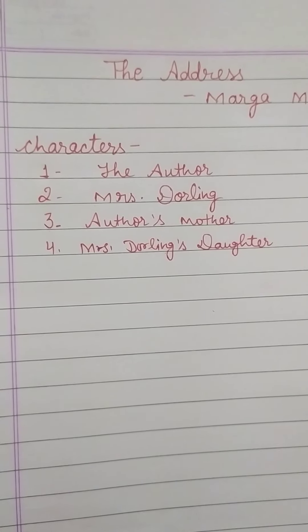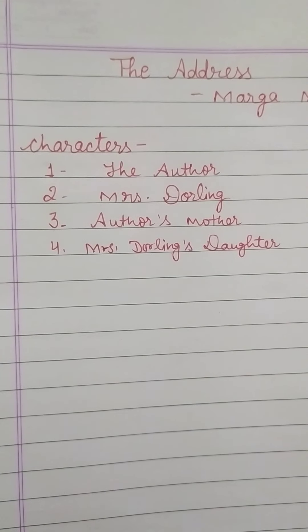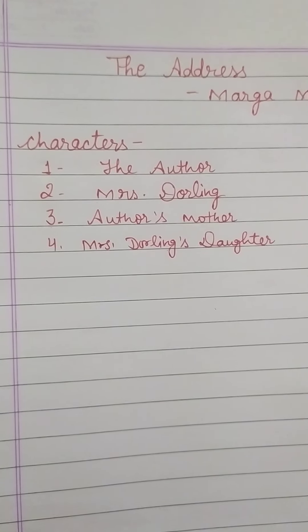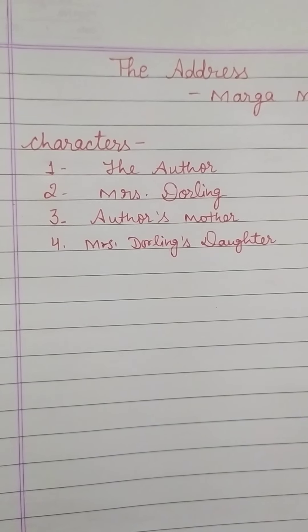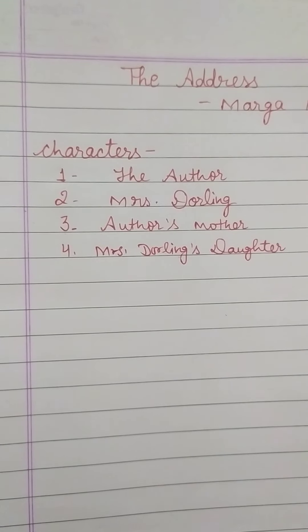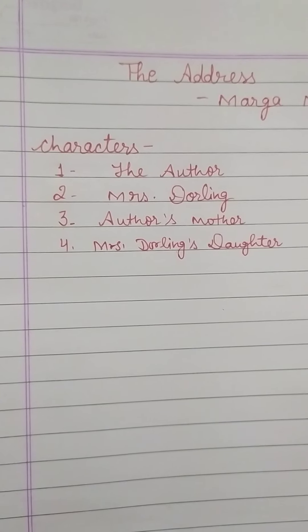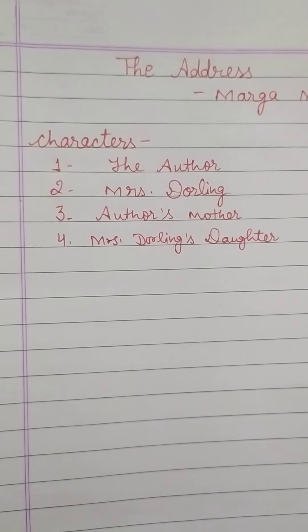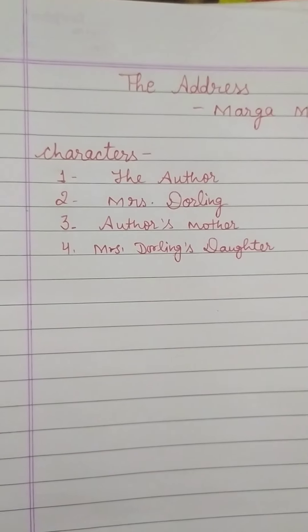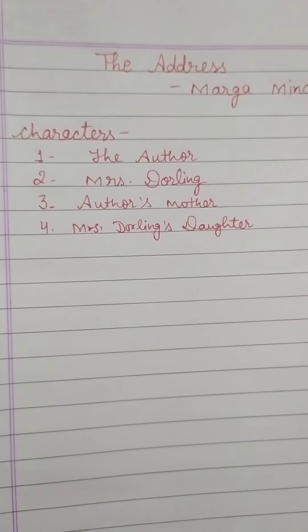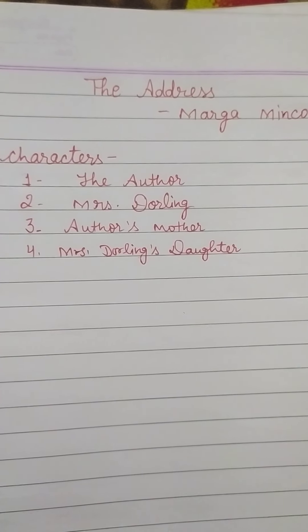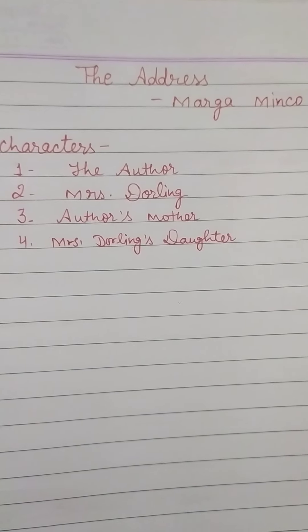When she went to Marconi Street, house number 46, a woman opened the door partly — not completely — and did not identify her. Mrs. Darling had not expected the girl to come back alive. She refused to recognize the author, and the narrator wondered if she had come to the wrong place. But when she read the nameplate, she was sure she was at the correct address.